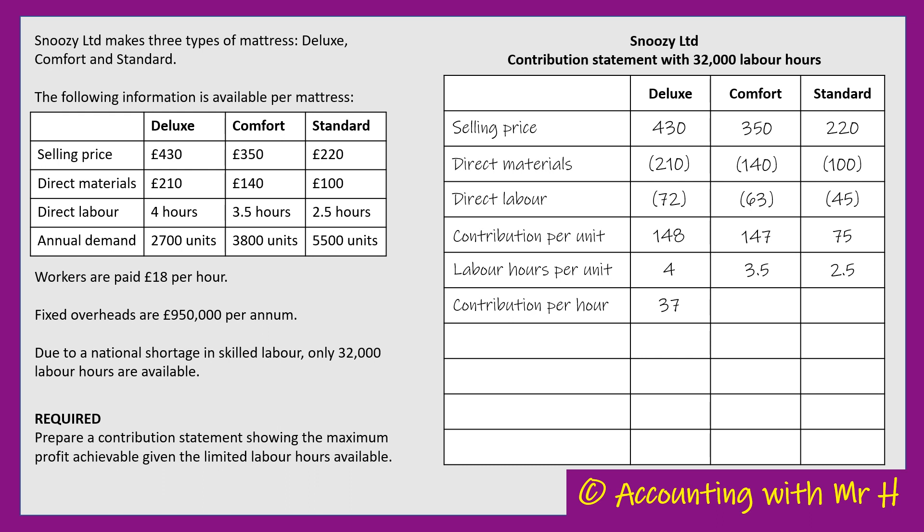Doing the same for the Comfort: the contribution per unit is £147, but I need three and a half hours to generate that £147. So £147 divided by three and a half is £42. Per labour hour, the Comfort will generate a contribution of £42.